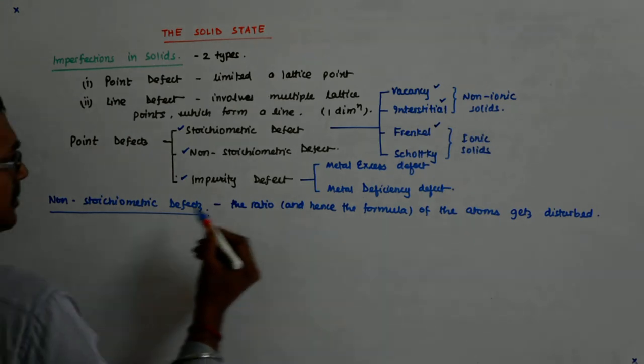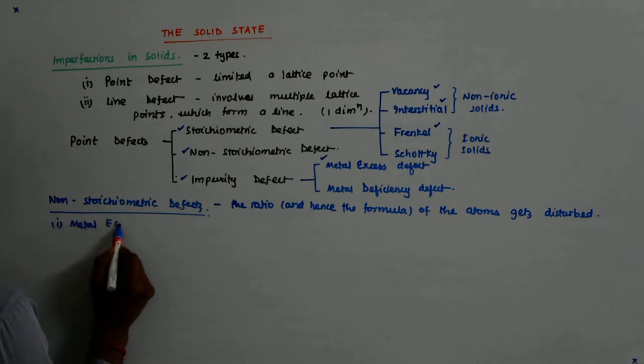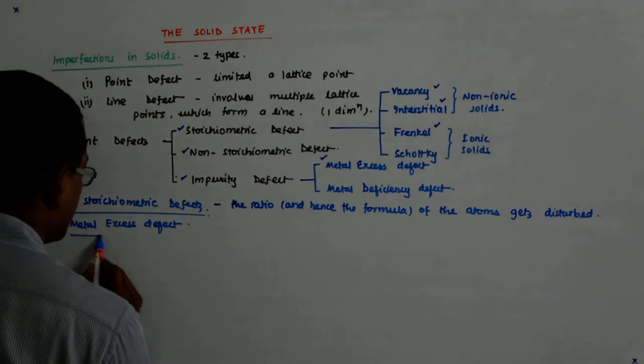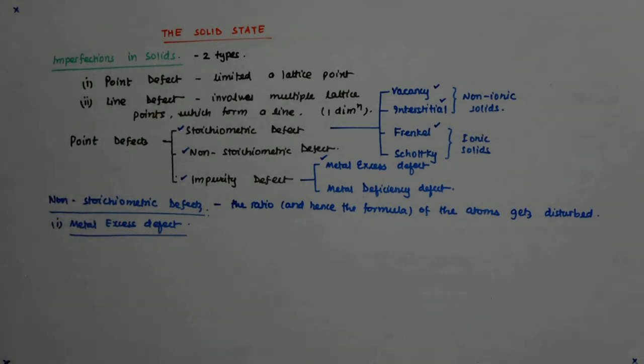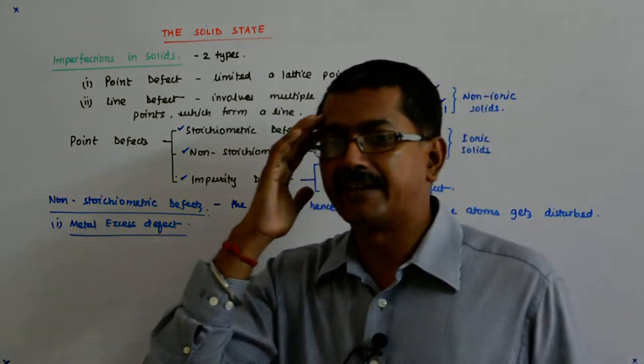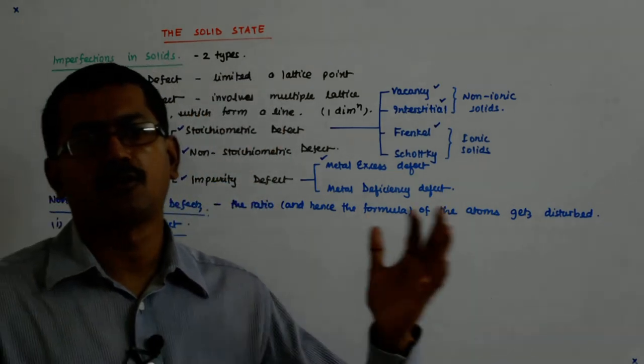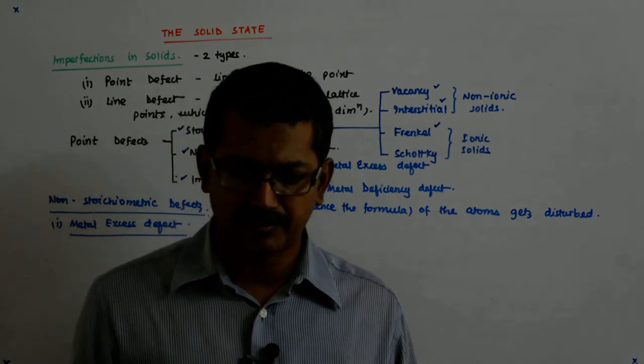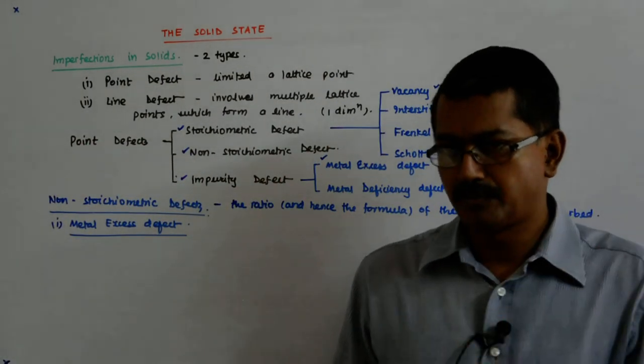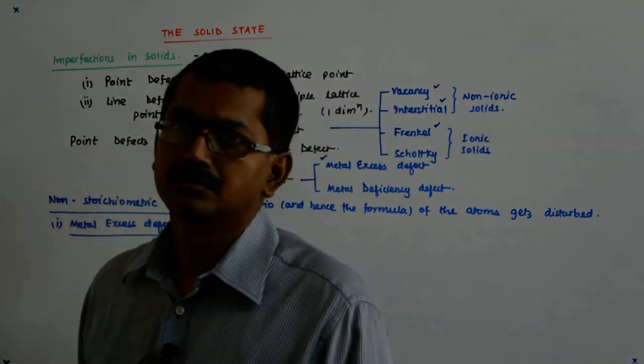Let us try to discuss the metal excess defect. What is the metal excess defect? Let us say you have NaCl and you have an environment of sodium atoms in vapor phase and you heat it there.